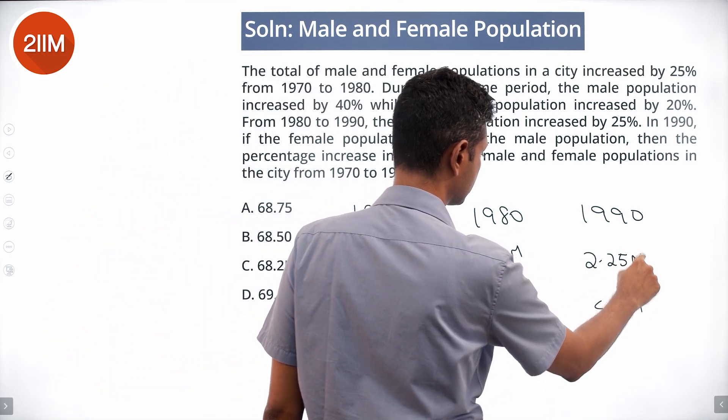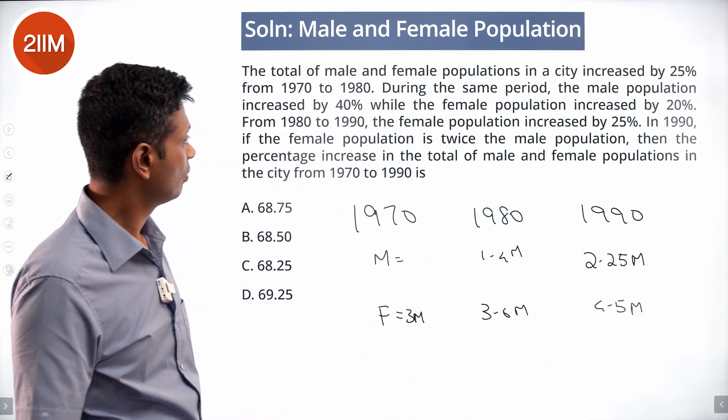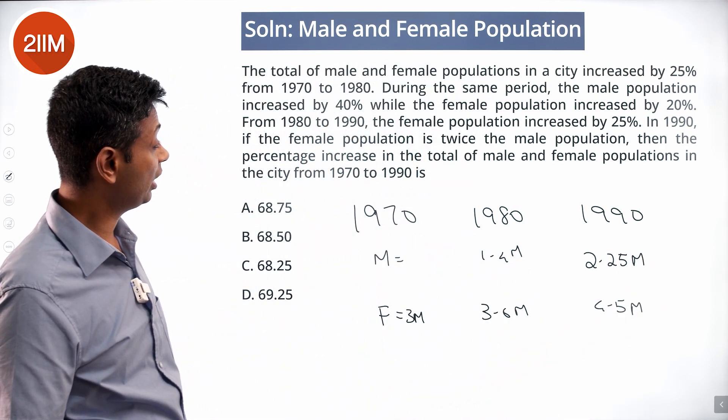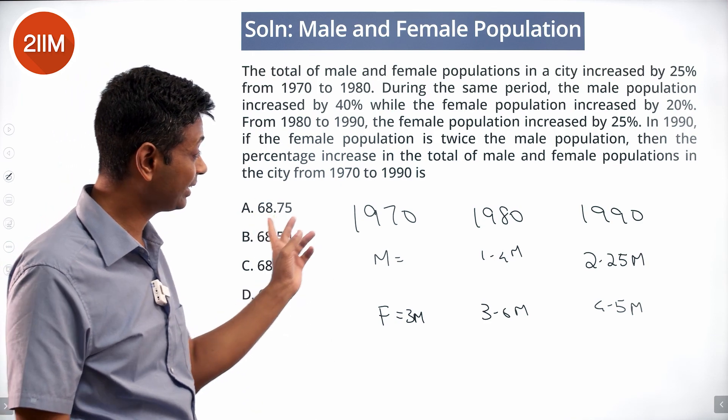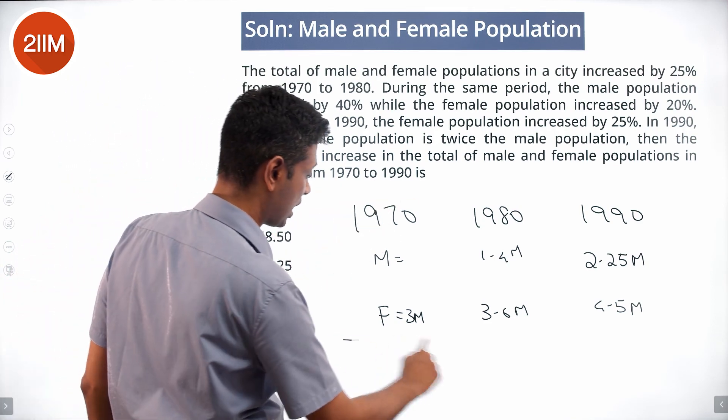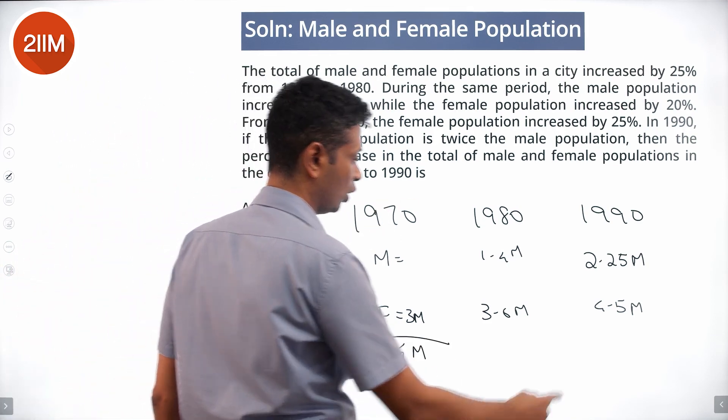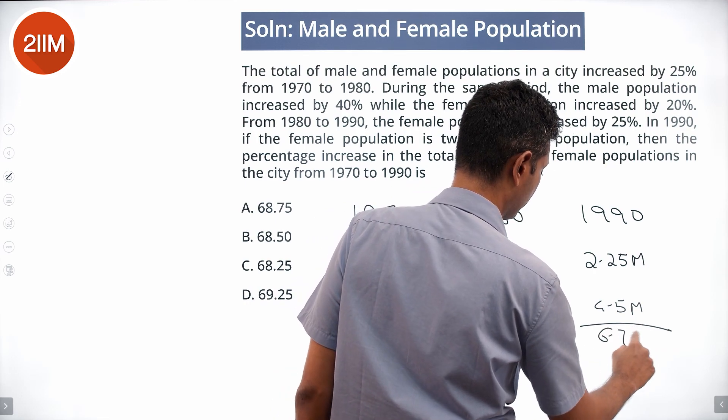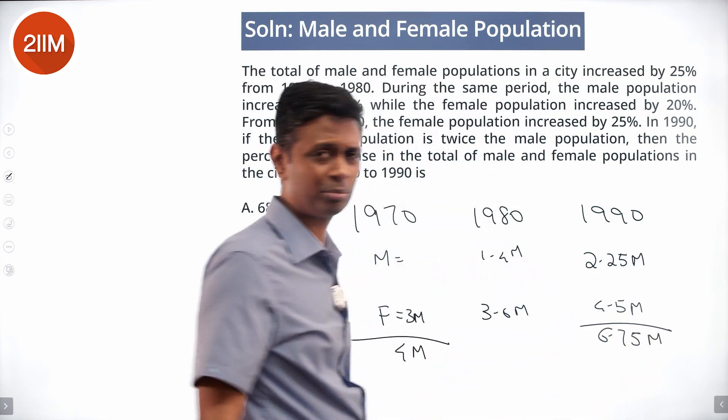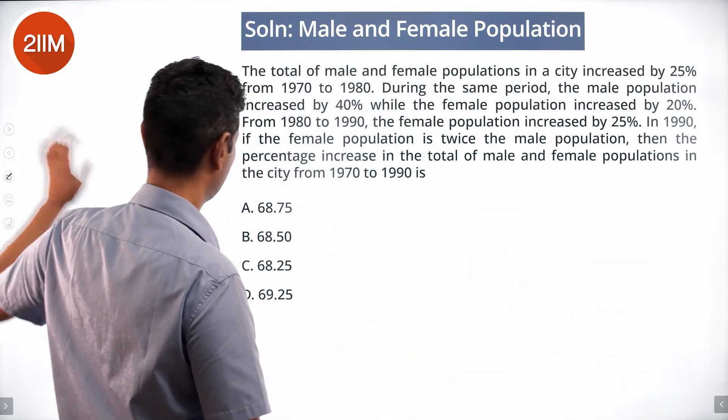Then the percentage increase in the total of male and female populations in the city from 1970 to 1990: we started at 4M and ended with 6.75M. We want to find the percentage increase.